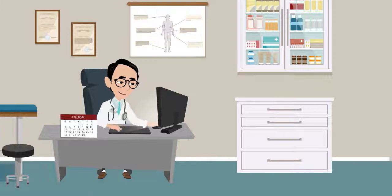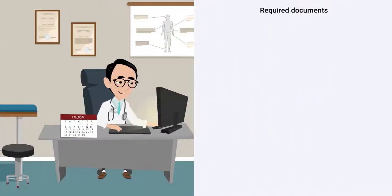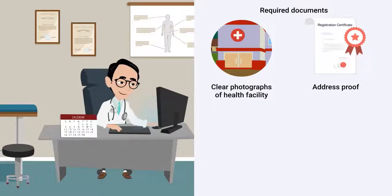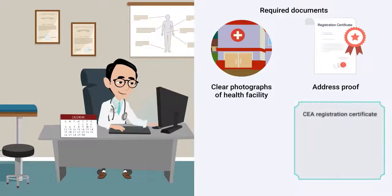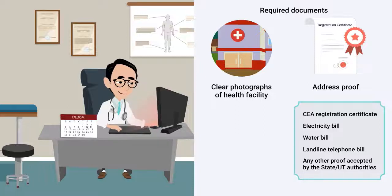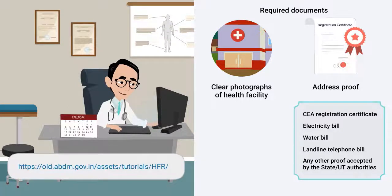Before starting the registration process in HFR, please keep the required documents handy for faster registration. These include clear photographs of your health facility — building photograph and board photograph — and address proof for private and public-private partnership facilities. Address proof may include a CEA Registration Certificate, Electricity Bill, Water Bill, Landline Telephone Bill, Rent Agreement, Title Deed, Property or Land Record, or any other proof accepted by the respective State or Union Territory authorities. Visit the link to learn more.